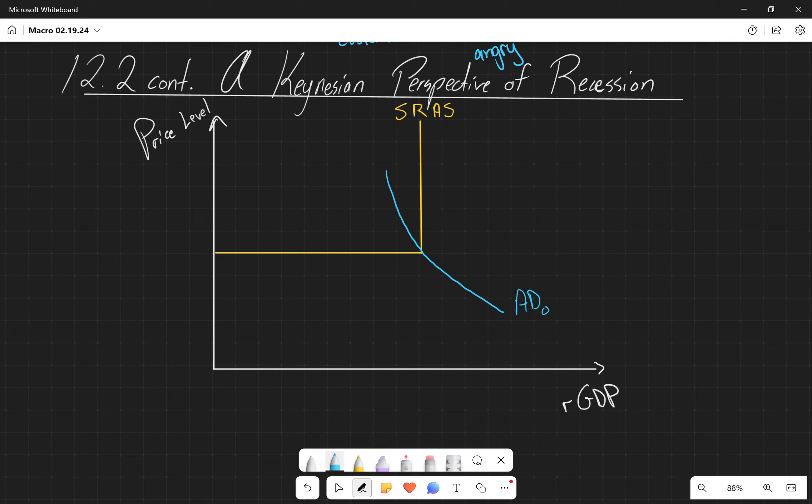So picking up where we left off in chapter 12, talking about Keynesian perspectives on the macroeconomy, we left off talking about why Keynes asserted that the short run aggregate supply curve looks like this. And it's because of the coordination argument.